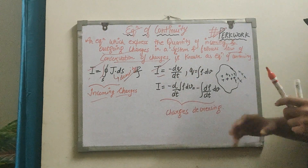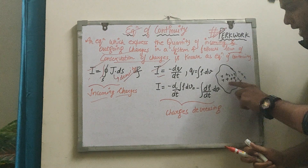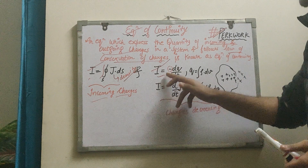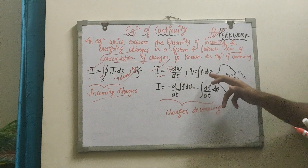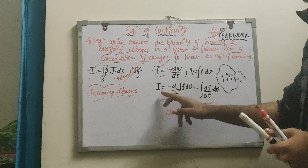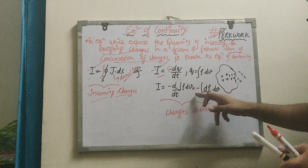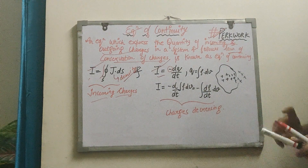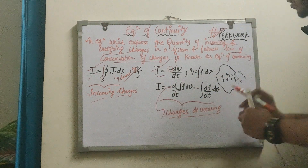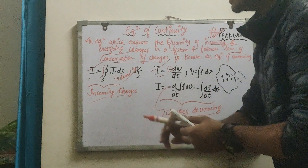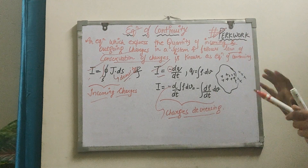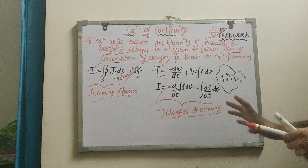This was our first equation. The second equation is: i is equal to minus dQ/dt, where Q is equal to the volume integral of ρ·dV, which gives us minus d(ρ)/dt into dV. And the incoming charge i is equal to the integral of J·dS, where J is current density. I hope that is clear — in the derivation we simply need to equate these.